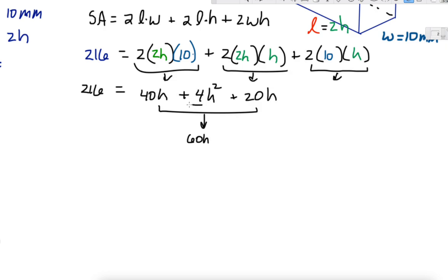We've got like terms here, let's put those together, 60h, and I'm just going to write 4h squared in front. So we have 216 equals 4h squared plus 60h. One thing we can do to simplify this whole thing, I hope you see that at least a 2 goes in everything, but actually 4 will divide into all of these. So 4 goes into 216 evenly, 54 times. 4 goes into 60, 15 times.